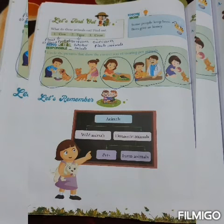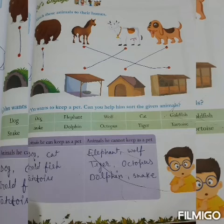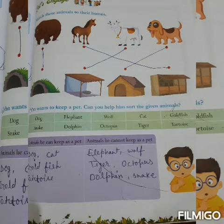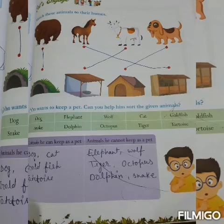Let's remember what we learned in this chapter. The chapter is called Animals. There are two types of animals: wild animals and domestic animals. Domestic animals are also of two types: pets and farm animals.